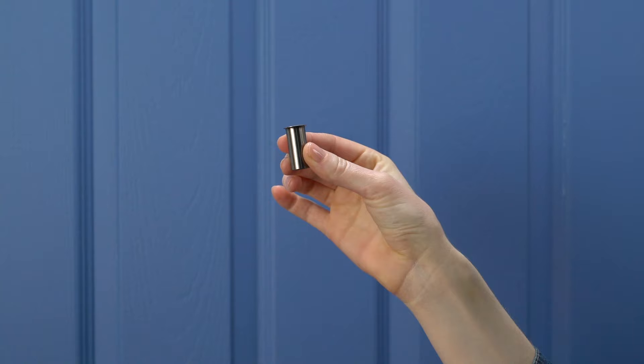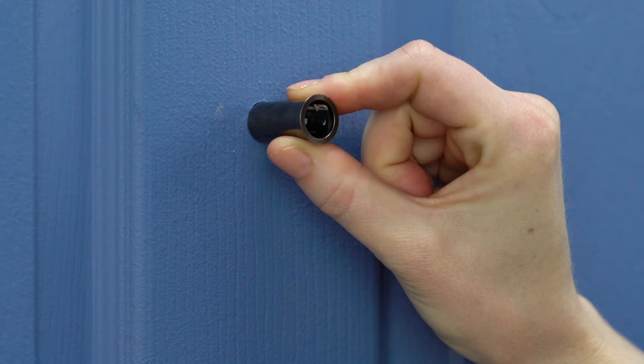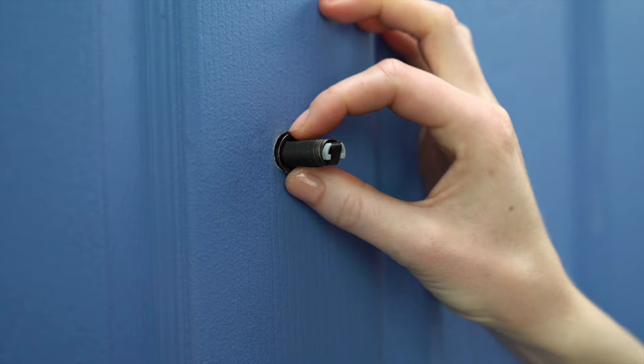Slide the adapter onto the tube towards the hole. If it doesn't fit, that's fine. You won't need it. If it does fit, insert it all the way until the rim is flush with the door.